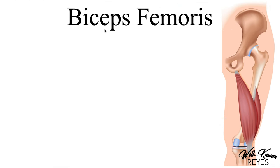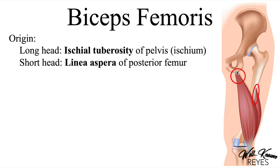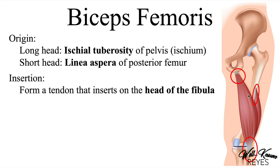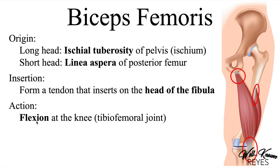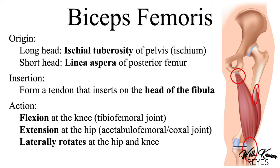The first muscle we're going to cover is the biceps femoris, shown here in the posterior view. The origin of the biceps femoris long head is on the ischial tuberosity of the ischium, and the short head is on the linea aspera of the posterior femur. These two heads — the long head and the short head — form a tendon that inserts on the head of the fibula. Its actions are flexion at the knee at the tibiofemoral joint, extension at the hip at the acetabulofemoral or coxal joint, and it also laterally rotates at the hip and knee when flexed.